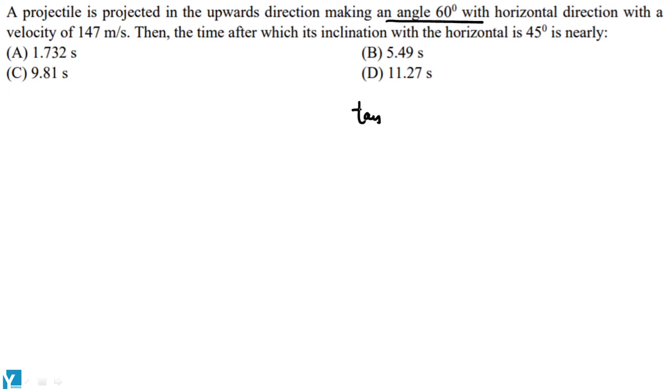Inclination with the horizontal at any time is given by a formula: vy upon vx. vy will change according to this formula, vx ki value remains constant at ux. uy will be u sin theta, and ux ki value will be u cos theta.